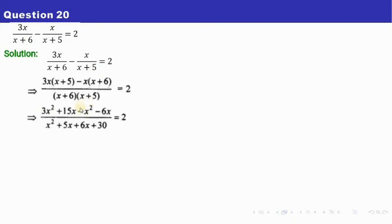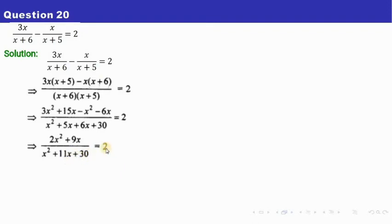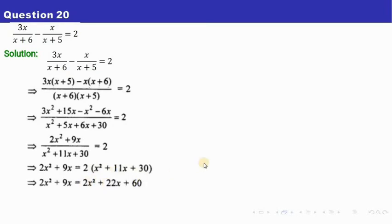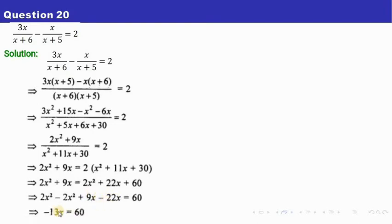We have 3x squared minus x squared, so it's 2x squared. And 15x minus 6x is plus 9x. In the numerator we are going to have 2x squared plus 9x, all divided by x squared plus 11x plus 30, equals to 2. Now do the cross multiply. Take everything out, keep only 60 here. So this comes over as minus 2x squared, and 22x comes as minus 22x. So 2x squared and minus 2x squared get cancelled. We have 9x minus 22x, which is minus 13x equals to 60. So the value of x turns out to be minus 60 by 13. You may pause the video to note down.